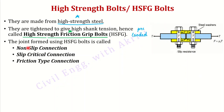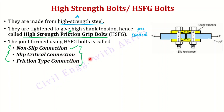The joints formed by HSFG bolts are called no-slip connections, slip critical connections, or friction type connections. These terms are important because in a question you may be told to create a no-slip connection without being told which type of bolt to use. You should know that in such a case you use HSFG bolts. Slip critical connection and friction type connection are all synonyms — they ultimately mean the same thing.